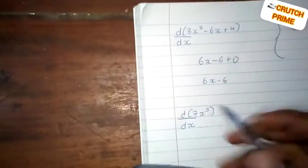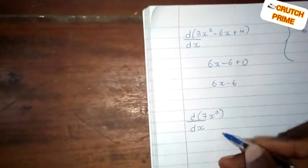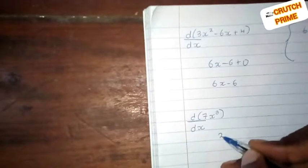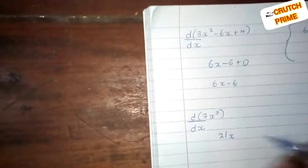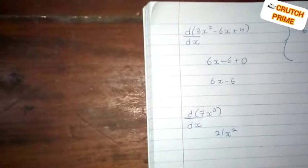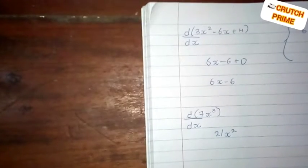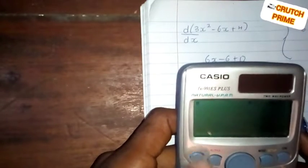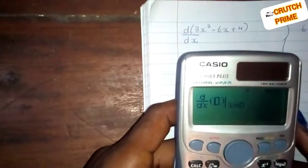Let's go to the next question. Find the derivative of 7x cubed. By normal procedure, this gives us 3 minus 1 for the power, and 3 times 7 equals 21, giving 21x raised to the power 2. Now how do we confirm this in our calculator? Like I said, press Shift and this to get the derivative symbol.